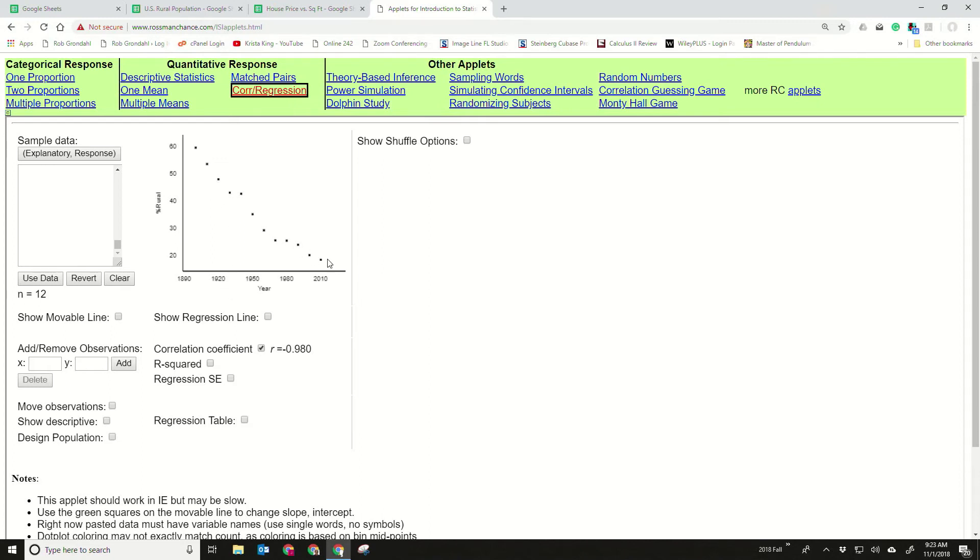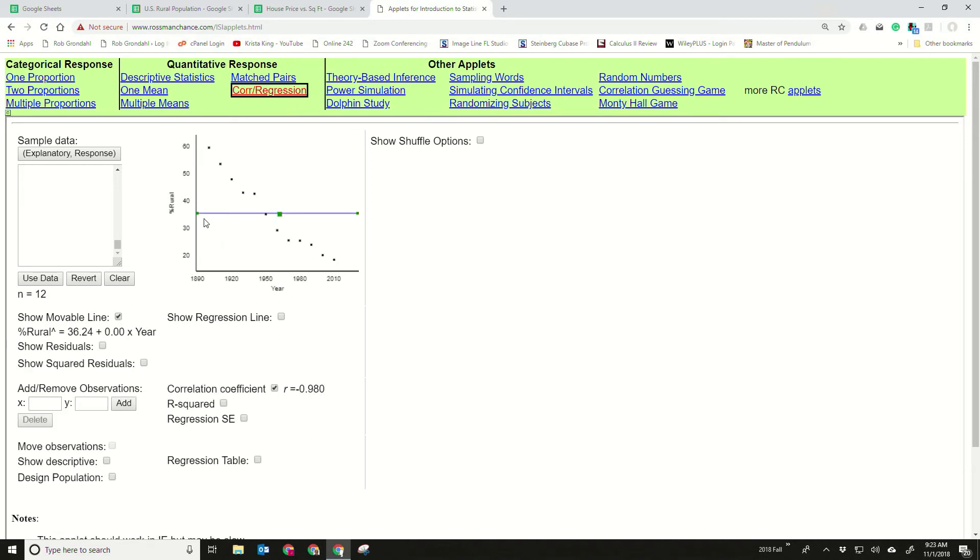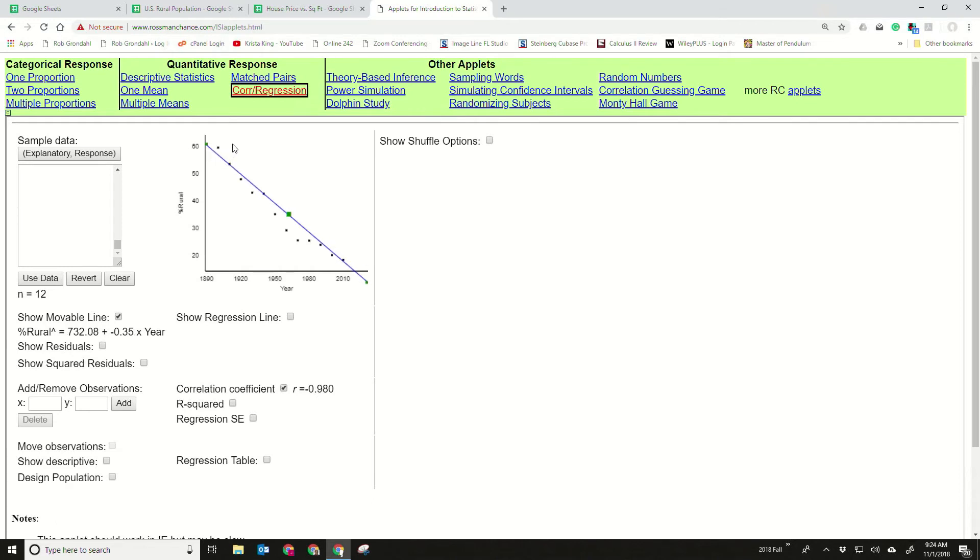One thing you can do on this app is you can try and lay a line on top of that visually. So there's a box here to click on a movable line, and you can grab these endpoints and then move this around a little bit. I want this to be a little lower. But you can see once you lay a line on top of it how nicely that data is fitting to a line.